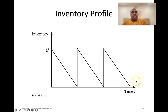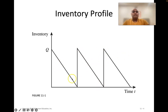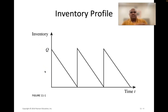When we order inventory from a supplier, the inventory level looks like this: you order a certain amount, it arrives, and over time you sell through it. The plan is that as soon as your inventory level hits zero, the next order arrives, bringing it back to Q, and the cycle repeats. This assumes inventory arrives all at once in a batch; if you're manufacturing yourself, it looks similar but slightly different.